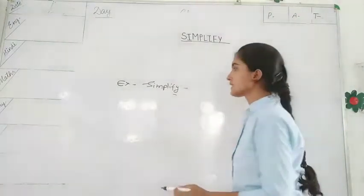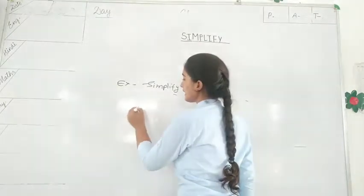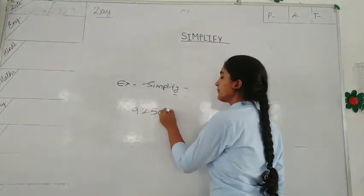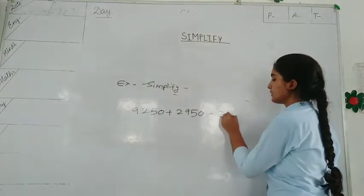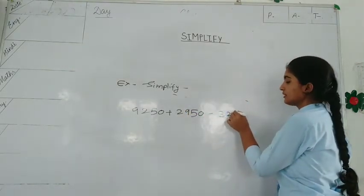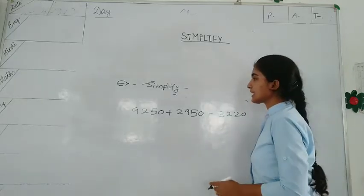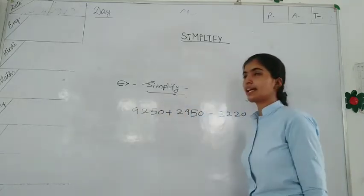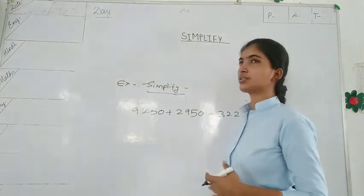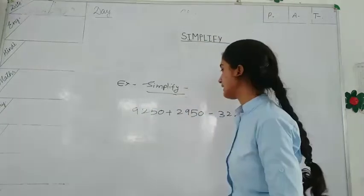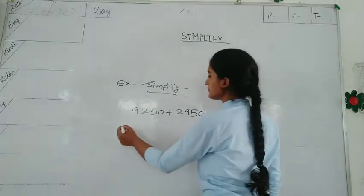As we have this equation: 9,000.13 plus 2,900.50 minus 300.13 plus 2,600. We have to solve this equation. How we can solve this equation easily. What is the equation? First, what is the equation?